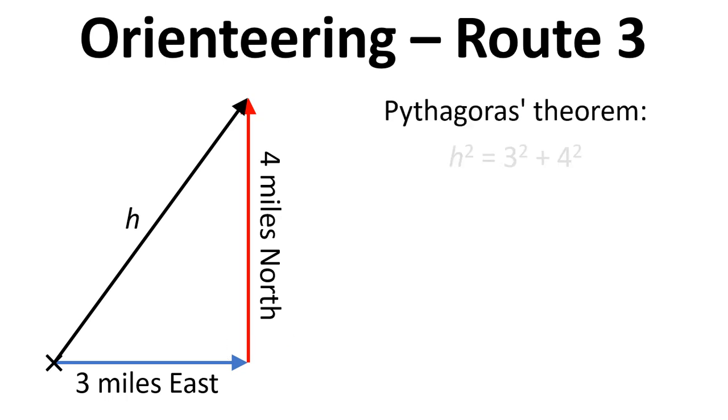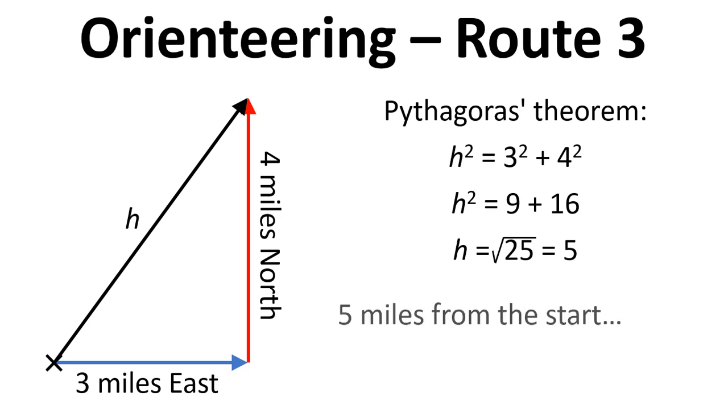So we can use Pythagoras to work out that distance. So h squared equals 3 squared plus 4 squared. So if we work these out in steps we can find out that h equals 5, so that's 5 miles in that direction. So we're 5 miles from the start, but what about the direction?